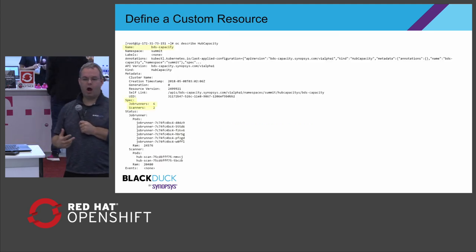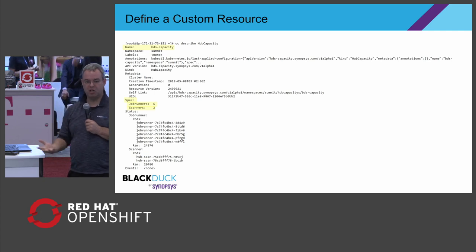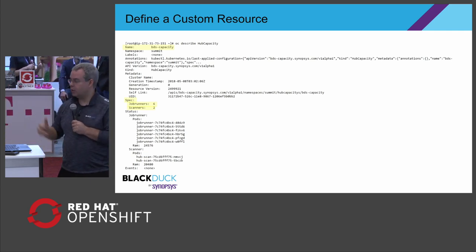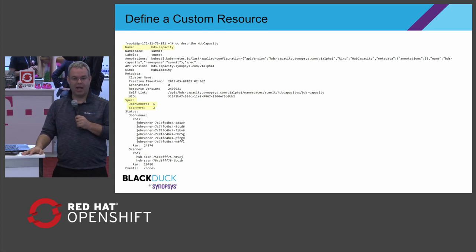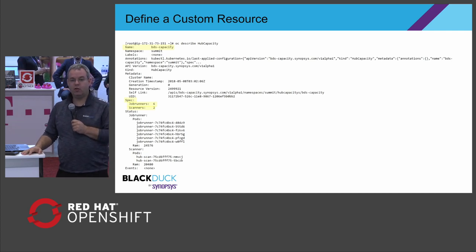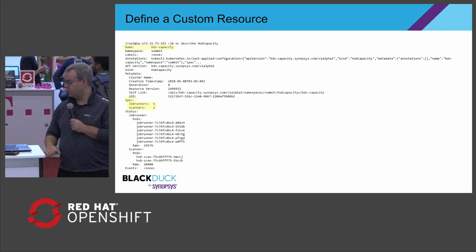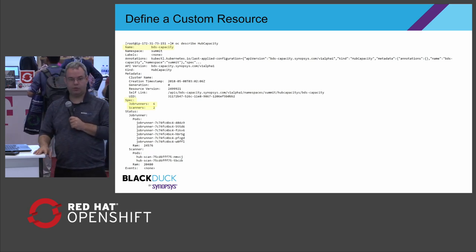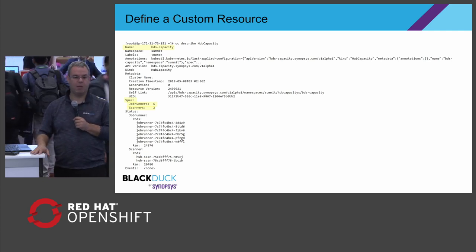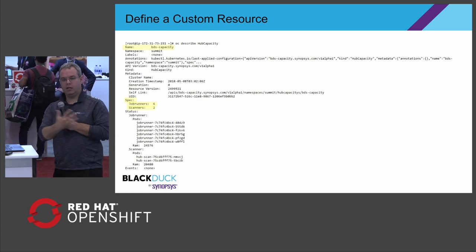In an operator paradigm, this becomes straightforward. I start by defining a custom resource — my hub capacity, my analytics engine capacity — with a name and a spec. In this case, I've hard-coded that I want six job runners and two scan clients. At the bottom is the status — the representation of the real world as it stands right now: those job runners are actually running, and that's the amount of RAM associated with the environment. If I wanted to scale these up, I would simply reapply this YAML with OC apply. That gives me a way to define an SLA, though it's still a human scenario.